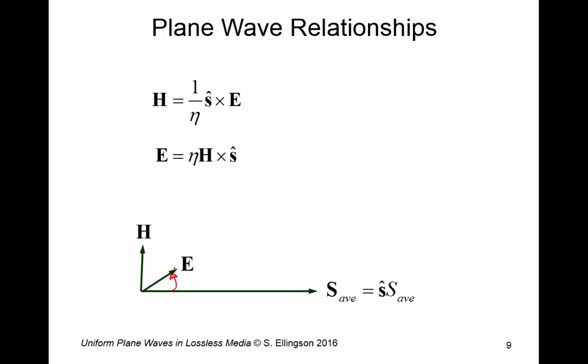Similarly, you can get H if you already know the direction of propagation because H cross S gives you a vector in the E direction. And you just multiply by the impedance to get the right units. So H and E are simply related. And then finally, as we just explained, the power density is given by this expression.